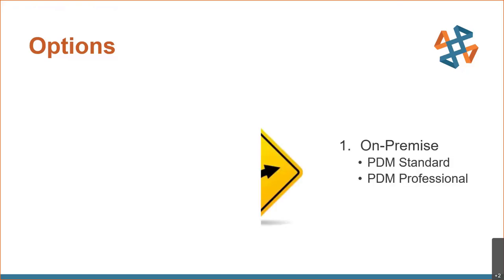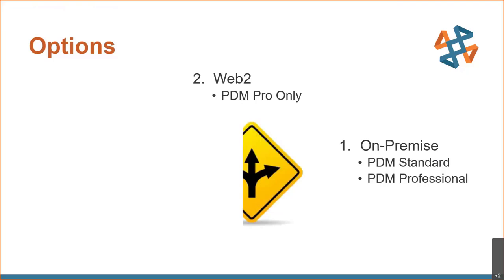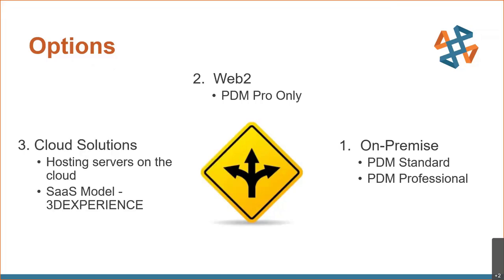The first one is existing on-premise solutions, and I'll explain what that means in a little bit. The second option we're going to talk about is for PDM Professional customers that can use Web2 functionality — maybe they're using it today, maybe not, or you just want to learn what it is and what it does. The third option we're going to talk about is a cloud-hosted system, and that can go both ways: a server-based system, what we call the IaaS method — Infrastructure as a Service — through Azure or some kind of cloud-hosting server system. Or there is the SaaS model, Software as a Service, which would entail the 3D Experience platform — a full-on cloud data management solution that we can discuss.